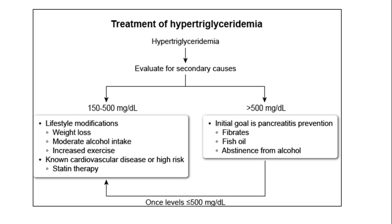For hypertriglyceridemia between 150–500 mg/dL, lifestyle modifications such as weight loss, moderating alcohol intake, and increased exercise along with statins are recommended. For levels above 500 mg/dL, the initial goal is pancreatitis prevention using fibrates, fish oil, and abstinence from alcohol. Once levels are below 500 mg/dL, statin therapy may be considered for those with known cardiovascular disease or high risk.